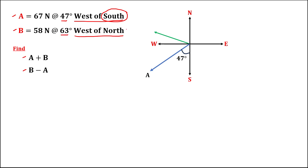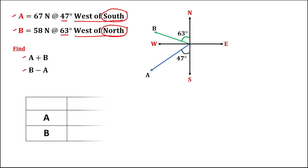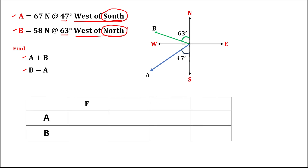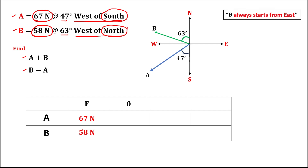For this angle, since vector B is west of north, the angle is in the north direction and this is 63 degrees. Then to find the resultant force using the components method, we're going to use this table. Take note that in the components method, theta always starts from east.